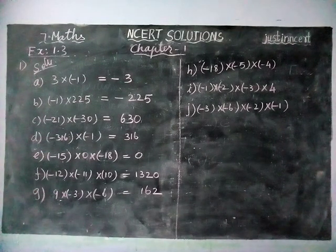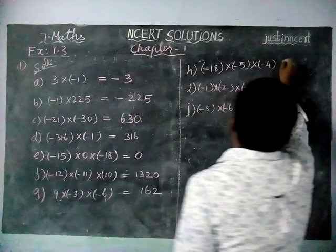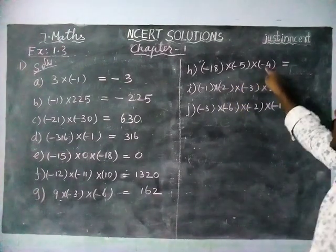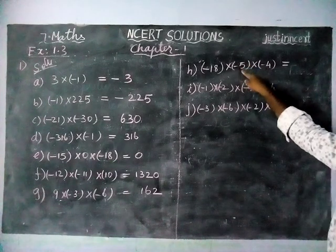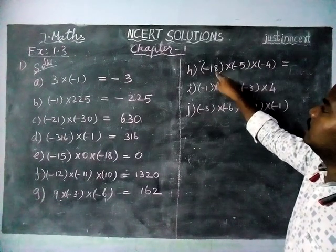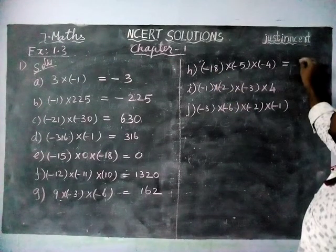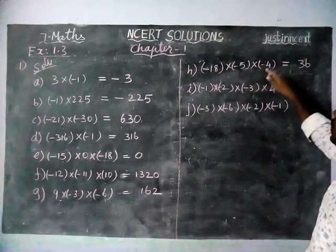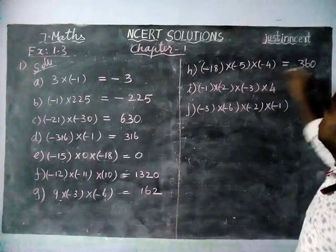And next, here 5 fours are 20, minus into minus is equal to plus. Then 20 into 18: 18 twos are 36, we have 20 so we added 0 here. And here, minus into minus is plus, plus into minus is minus.